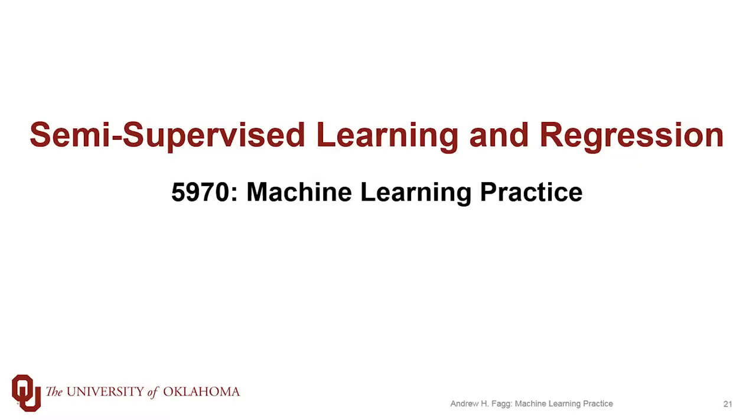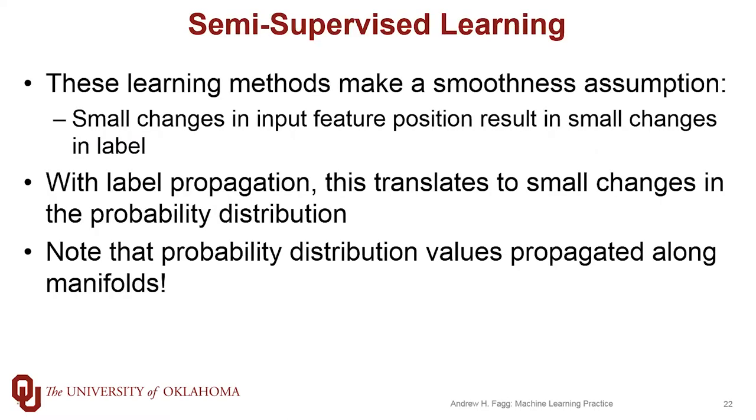We've been talking about semi-supervised learning and in particular have focused on the classification side of things. I wanted to spend a few minutes on regression. In general with semi-supervised learning, we're really making a smoothness assumption.